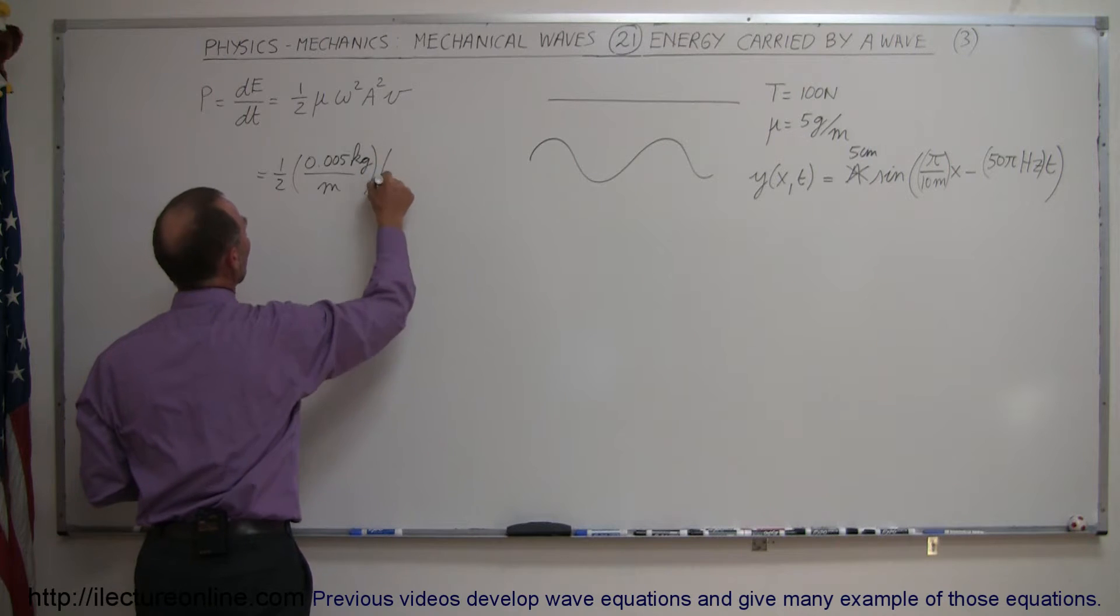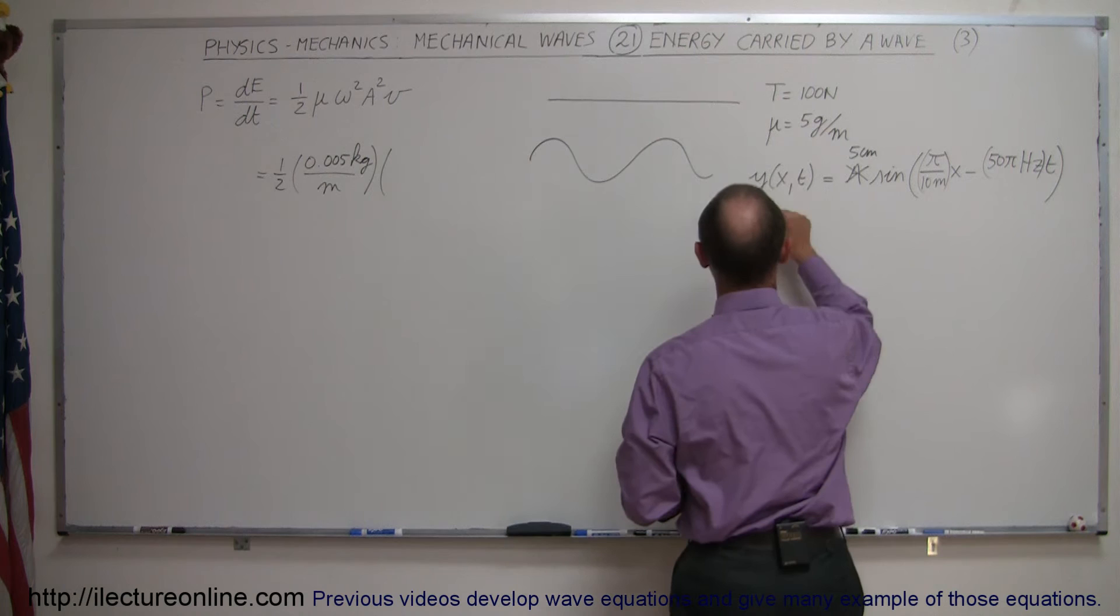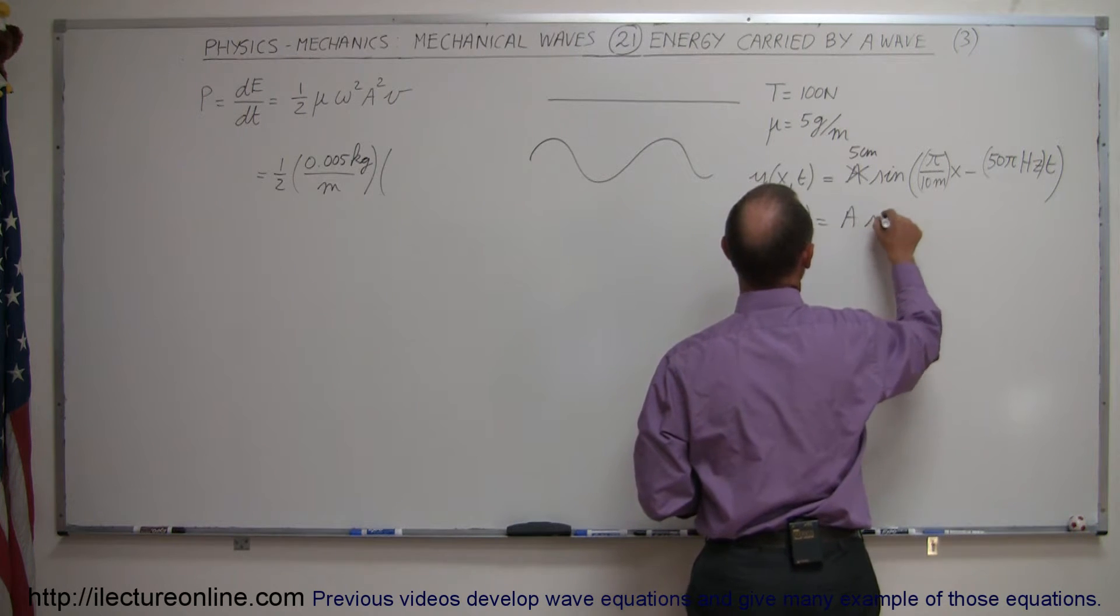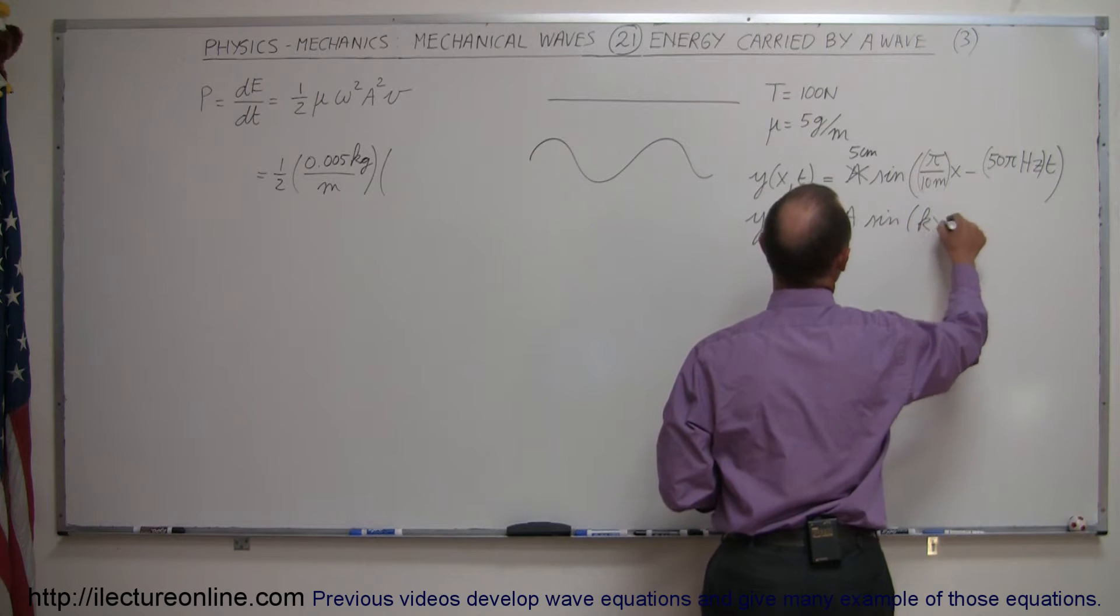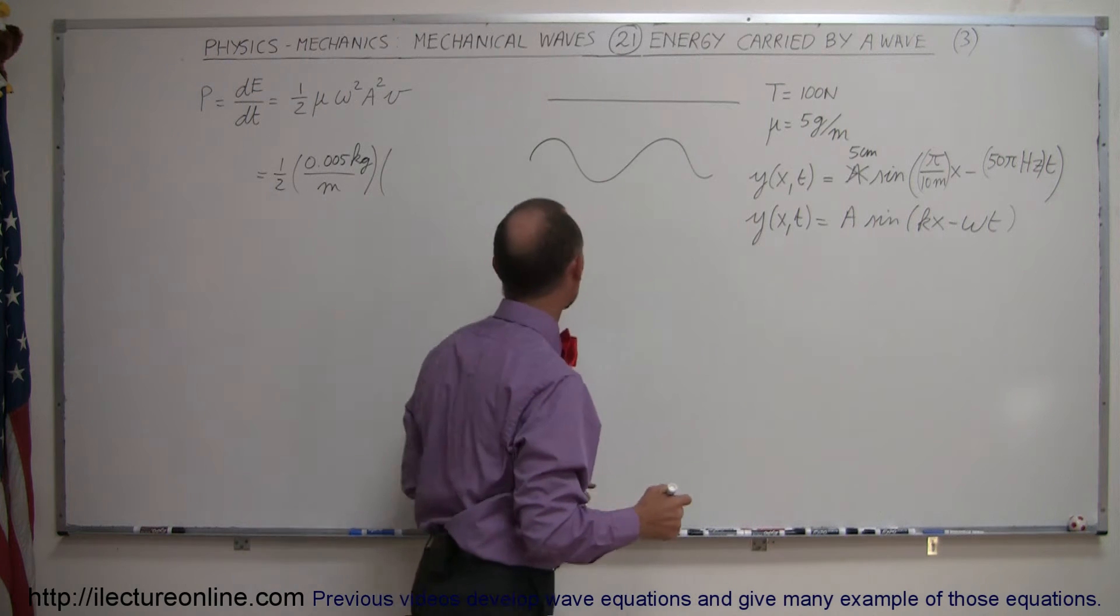Now we have to have an omega. And of course, remember that the standard equation for a wave, and it's always a good idea to write that down for comparison, is equal to the amplitude times the sine of kx minus omega t. So the omega is right here, 50 pi hertz.